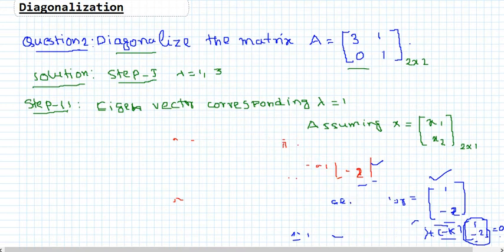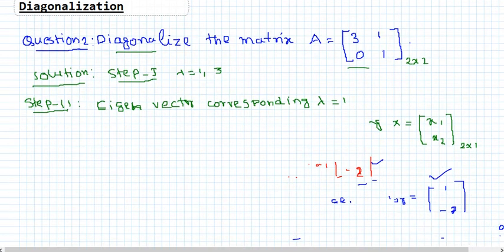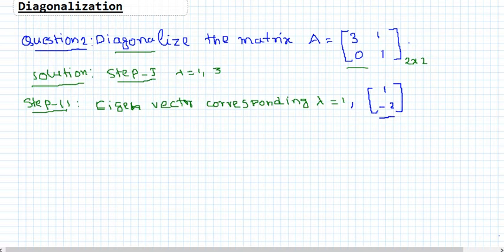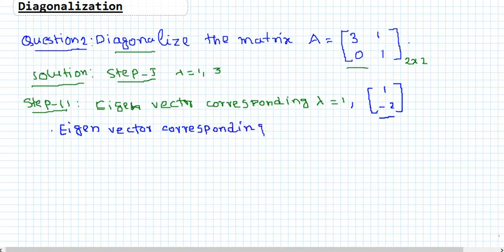From step 2, we found that one eigenvector corresponding to lambda = 1 is [1, -2]. Now we are going to find the eigenvector corresponding to the eigenvalue 3. Suppose y = [y1, y2] is our eigenvector. Then Ay = 3y, so [3,1; 0,1] times [y1, y2] equals 3 times [y1, y2].